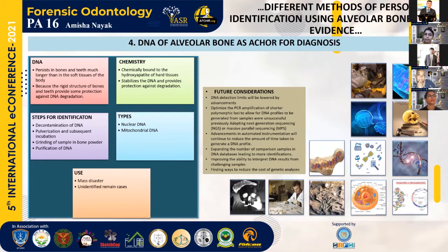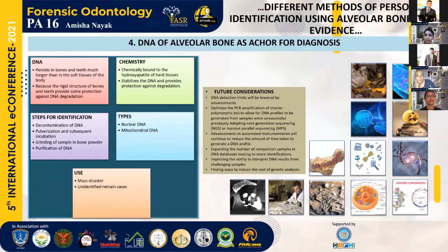The fourth method is DNA of alveolar bone as an anchor for diagnosis. DNA persists in bones much longer than in soft tissues of the body due to its chemical binding to hydroxyapatite in hard tissues. The identification steps include decontamination of DNA, pulverization and subsequent incubation, grinding of the sample to bone powder, and purification of DNA. Both nuclear and mitochondrial DNA can be extracted, and this method is used in cases of mass disasters and unidentified remains.